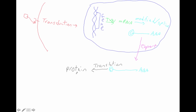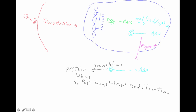Then this protein folds properly and is itself modified through the process called post-translational modification — because it occurs after translation. Things like phosphate groups, methyl groups, and acetyl groups can be added. A lot of different small chemicals can be added to help that protein achieve its full functional status.